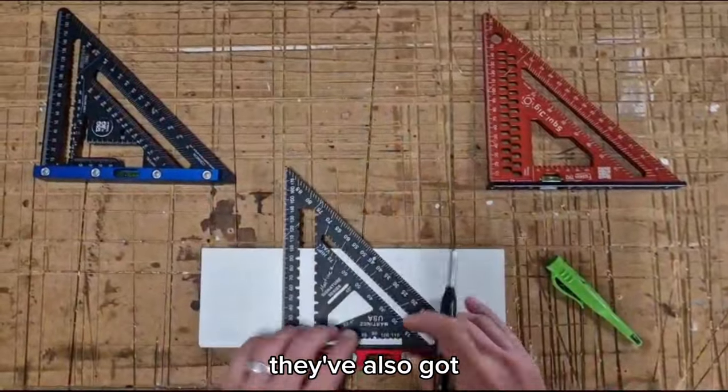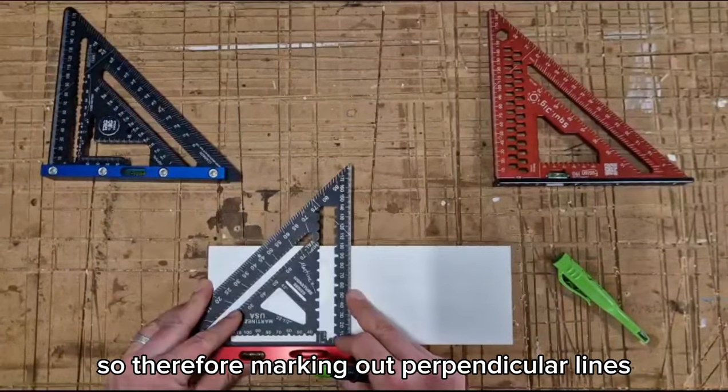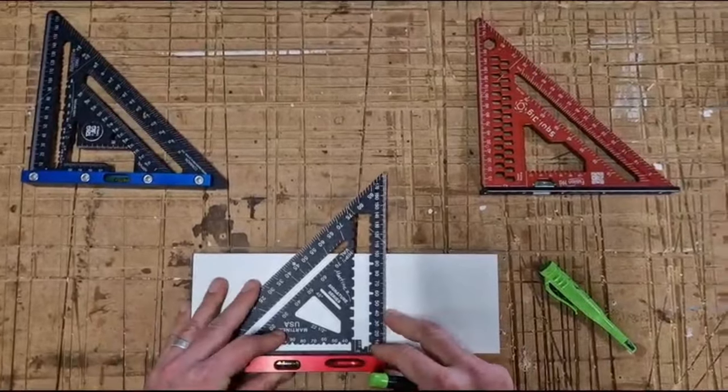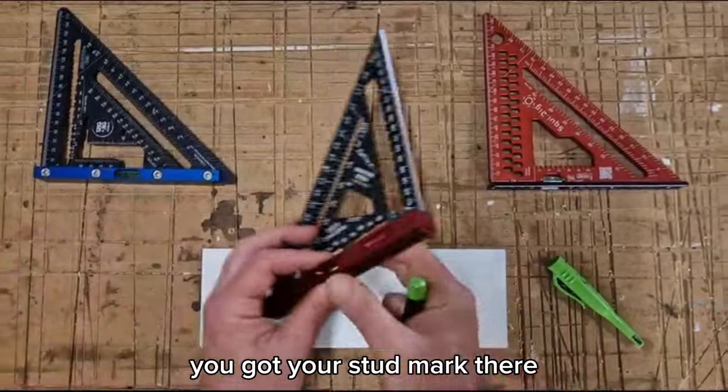They've also got measurements along the bottom here so they're for marking out perpendicular lines. So if you're marking out studs for instance, set that to 45 mil and there you go. You've got your stud marked there.